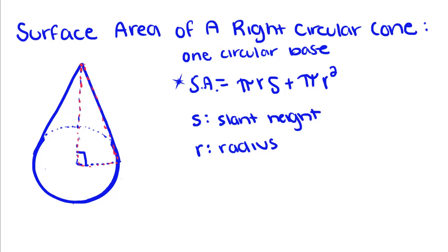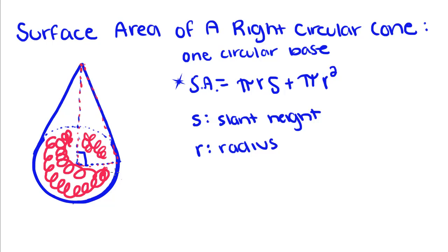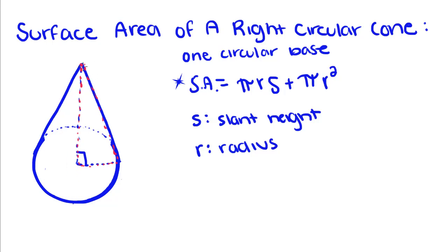Our last lesson for Intro to Geometry is going to focus on the surface area of a right circular cone. A right circular cone is a three-dimensional object with a circular base. The reason it's called a right circular cone is because when we draw a line from the top of the cone to the center of the circle, it's going to be perpendicular and form a right triangle with the radius and the side of the cone.